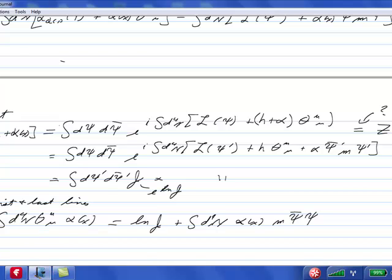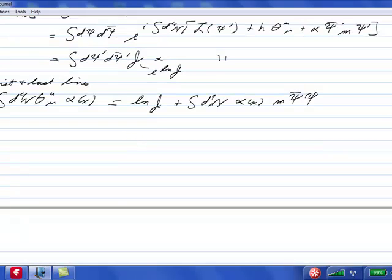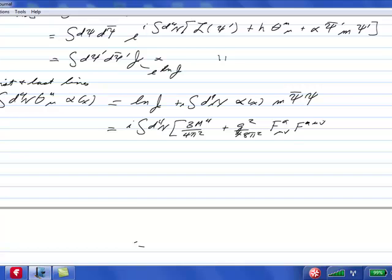And on the second line we have log j plus integral d4x alpha of x m psi bar psi. So without log j we just conclude that the trace was m psi bar psi, which is of course what the naive expectation would be. But then we have log j, we've calculated this is an i integral d4x. It was 3m to the 4th over 4 pi squared plus g squared over 48 pi squared, f mu mu, f mu mu, plus m psi bar psi, all of this times alpha of x.